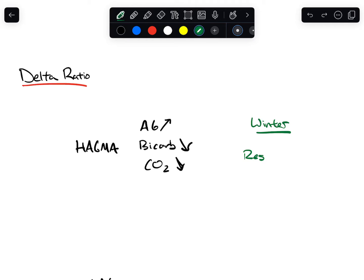What the delta ratio tries to answer is the other side of the coin, which is, is there a secondary metabolic process? The two main categories of this are going to be, one, a metabolic alkalosis.